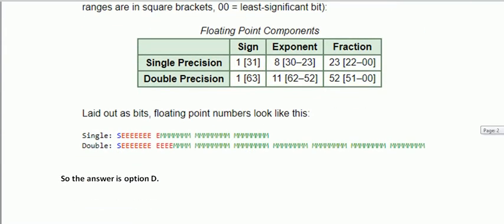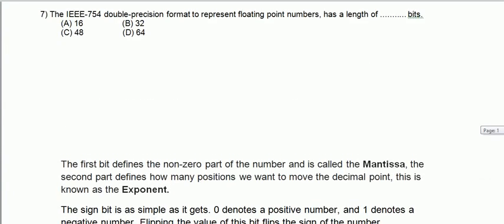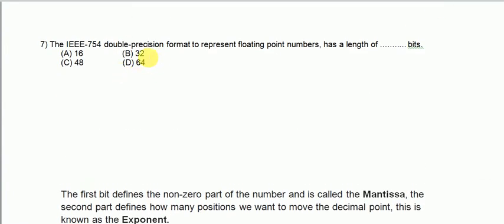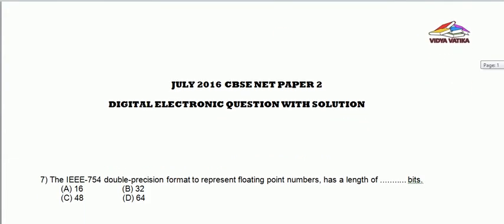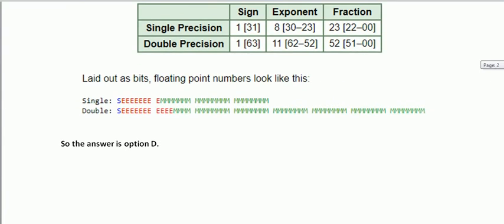So let us see the options. The option number D is 64. So the IEEE 754 double precision format to represent floating point numbers has a length of 64 bits. So the correct answer is option number D.